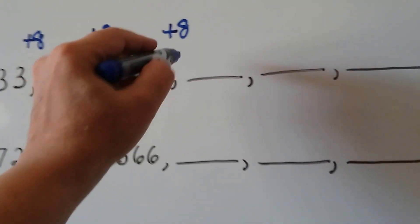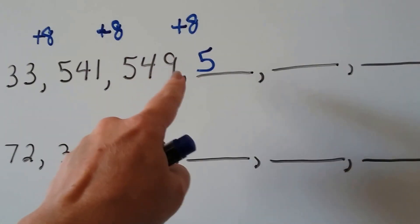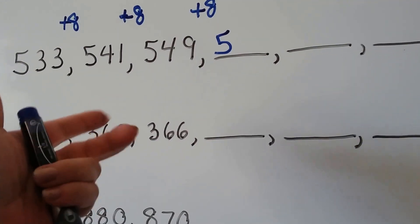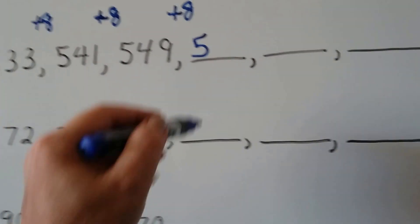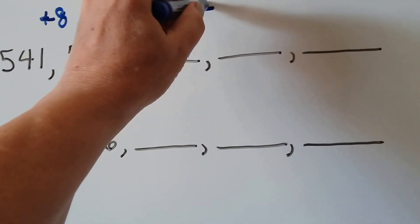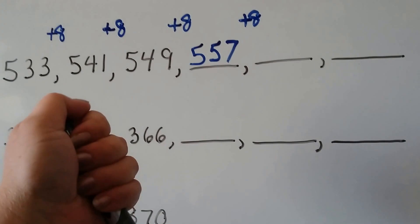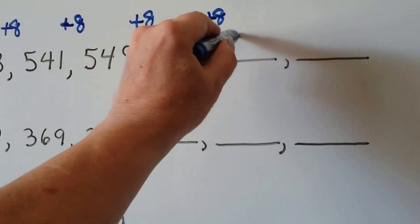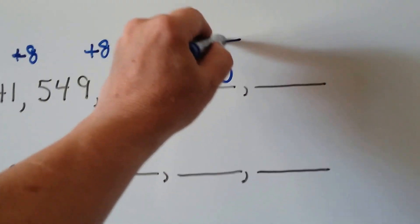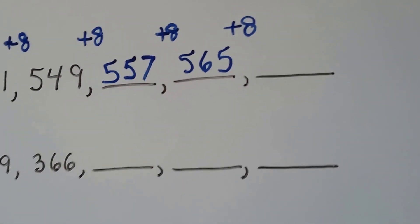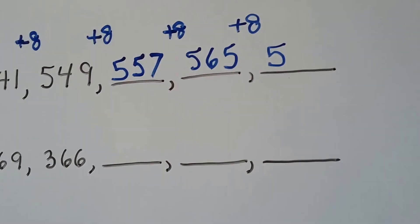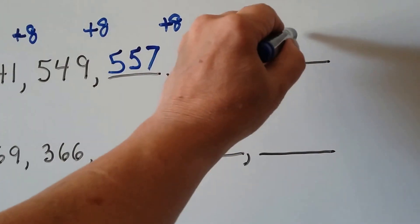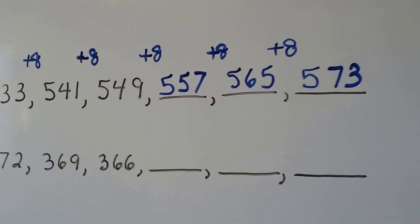The hundreds are going to stay a 5. Adding 8 to 49: counting up gives us 57, so the next number is 557. We need to add another 8 — 57 plus 8 is 65, so that's 565. Then add 8 again: 65 plus 8 is 73, so that's 573. The pattern was to add 8 each time.